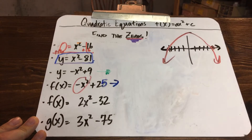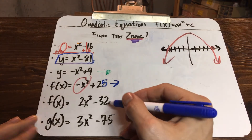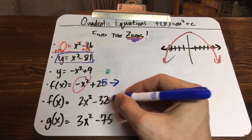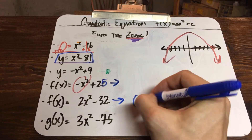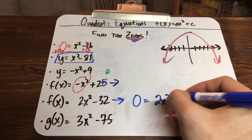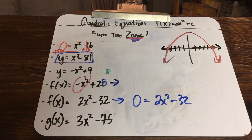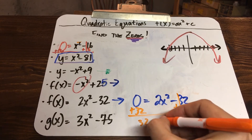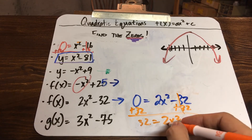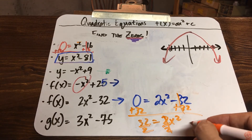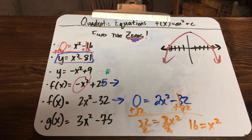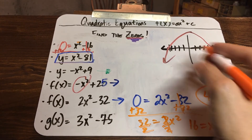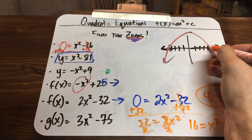The last two have coefficients other than 1. For 2x squared minus 32: put zero in for f of x, then add 32 to both sides to get 32 equals 2x squared. Divide everything by 2: 16 equals x squared. That should be 4 and negative 4. So this one has x-intercepts at 4 and negative 4.